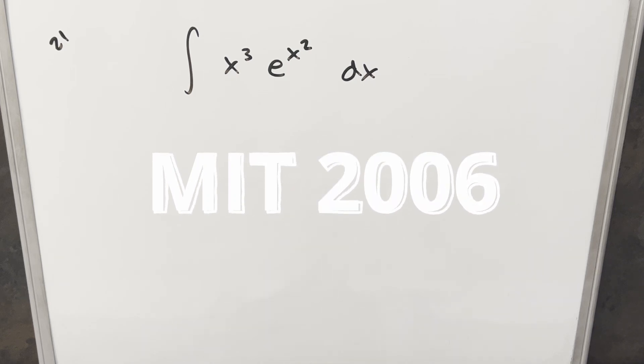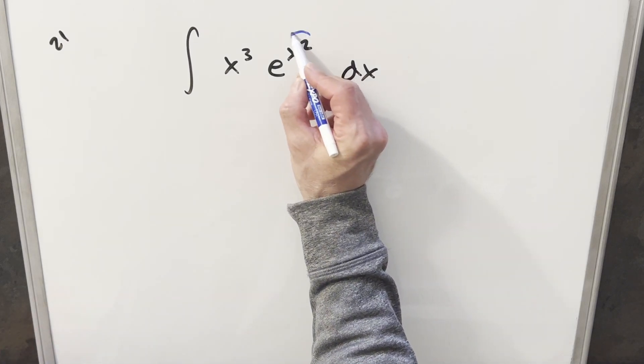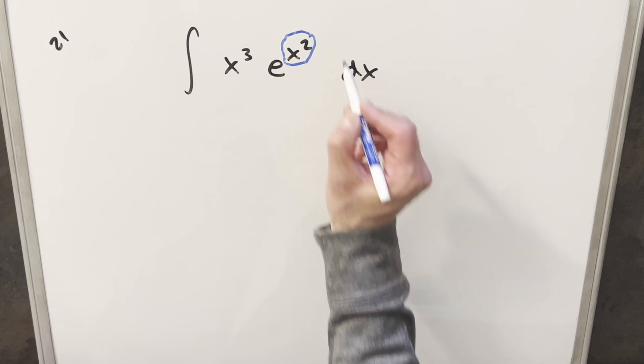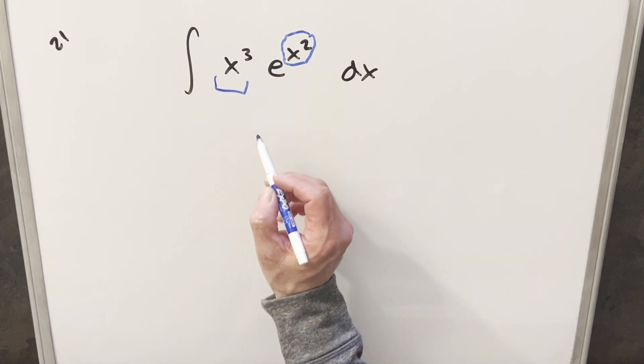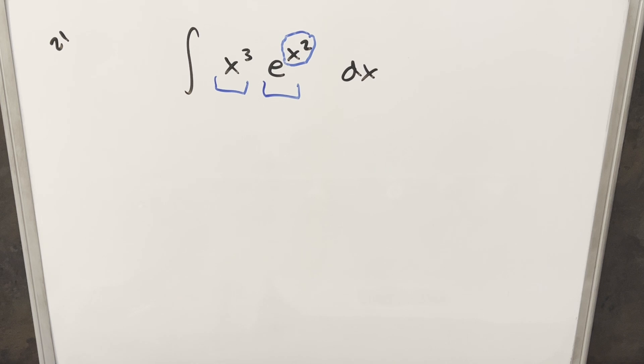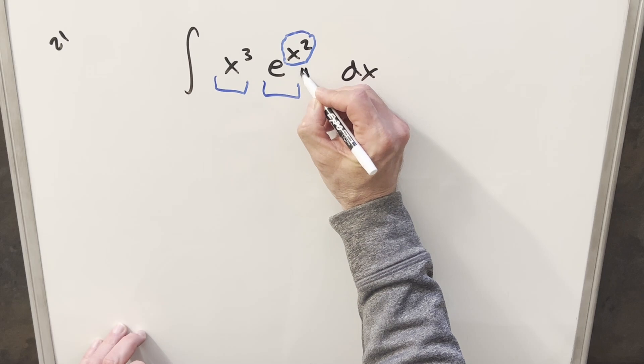We have the integral of x cubed times e to the x squared dx. Now the interesting thing here is we have x squared in the exponent, and we can't really deal with that. But the lucky thing is we've got more things over here, so this might help me do a u substitution. Also with two things, looks like integration by parts could work. So let's start with the u sub just to clean up this thing right here.